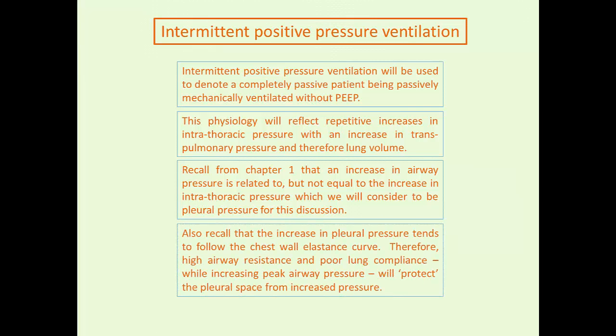The increase in pleural pressure tends to follow the chest wall elastance curve. In the completely passive patient who's not making any inspiratory efforts on the ventilator, the change in pleural pressure equals the change in lung volume divided by the chest wall compliance. The change in lung volume is determined by the lung compliance itself, but as you apply a volume from the ventilator to the lung, the lung expands out against the chest wall. Therefore the compliance is determined by how stiff the chest wall is as the lung presses out against it.